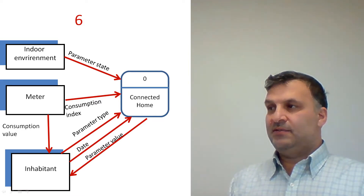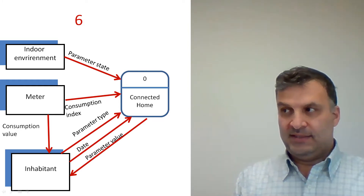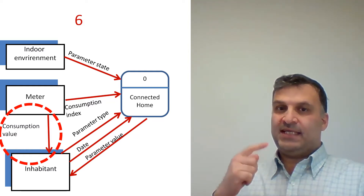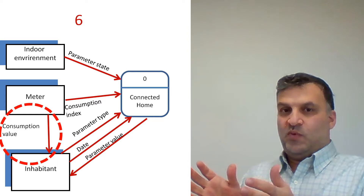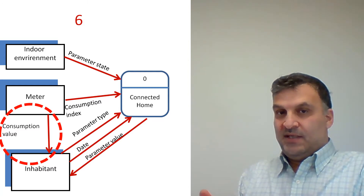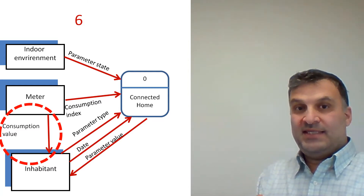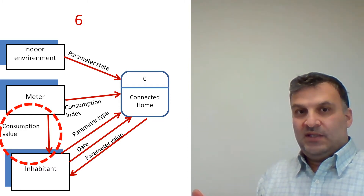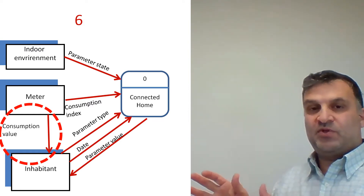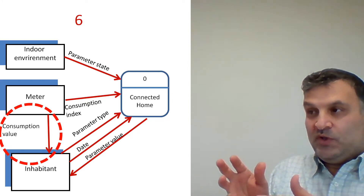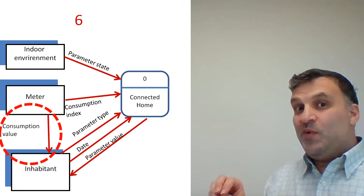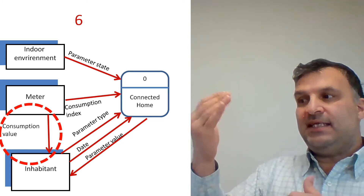What is the error here? I think you can discover it: there is direct communication between two external entities. DFD helps us to represent our system — what happens in the external environment is not our responsibility. If we consider that this arrow should be inside our system, then we should change something: we would need to say that the meter itself is part of our system. We cannot represent communication between external entities in a DFD.